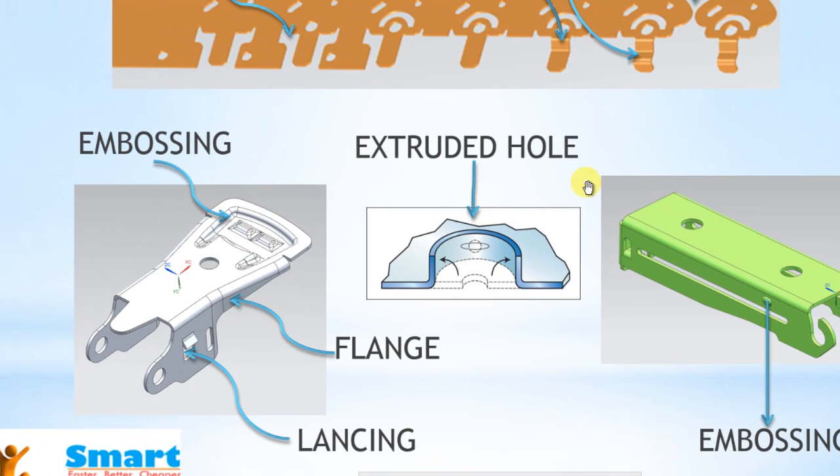Now we will discuss extruded holes. These are very common operations done nowadays. These holes are used as screw holes or rivet holes. Initially a small hole will be pierced, and with a special tool we will enlarge this diameter.